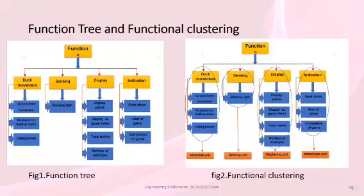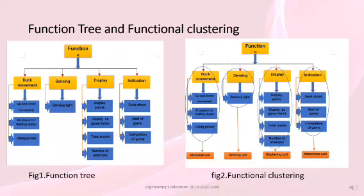For the functional tree and functional clustering, we first identify the functions and then categorize them under main functions. As you can see here, document, sensing, display, and indication are the four main functions. The identified sub-functions are categorized under these main functions, and by using them we make clusters: emotional unit, sensing unit, displaying unit, and interface unit, as shown in figure 2.